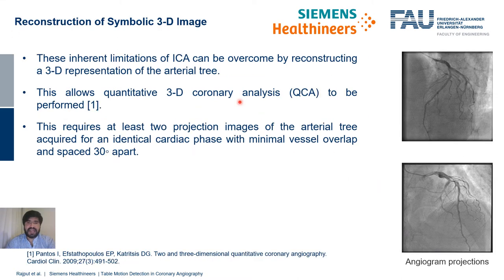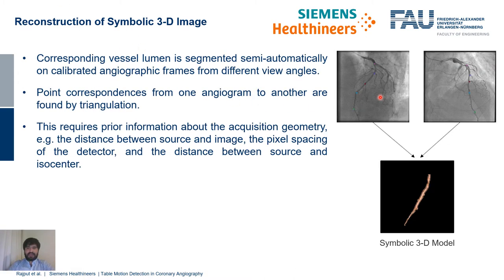These limitations of ICA can be overcome by creating a 3D model of the arterial tree. This allows us to utilize 3D coronary analysis to evaluate the performance of a segmented lumen. To create a 3D model, we require at least two projection images from two different view angles, at least 30 degrees apart, for the same cardiac phase. Once acquired, we manually select a few points on one angiogram and corresponding points on another are found using triangulation. This requires prior information about the acquisition geometry, such as the distance between source and image and the pixel spacing of the detector.